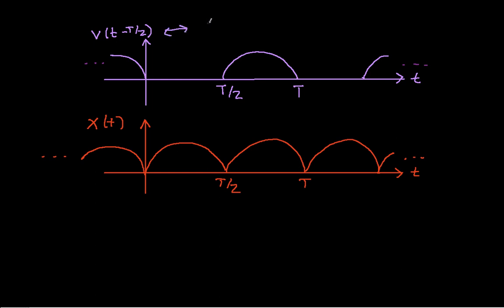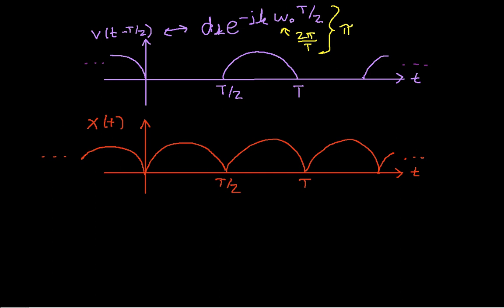So this is going to have Fourier series coefficients which is d sub k times e to the minus j k omega 0, and I'm shifting by t over 2. Now omega 0 is 2 pi over t, so omega 0 times t over 2 gives us a value of pi. So I have d sub k e to the minus j k pi.